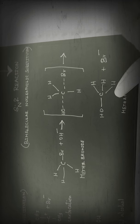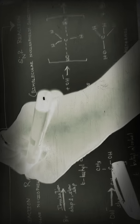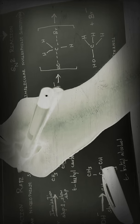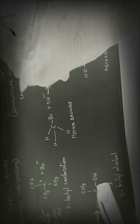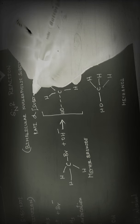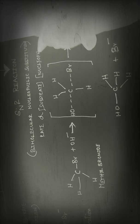So this is all. In SN2, the rate is proportional to both the substrate and the nucleophile. To summarize: for SN1, rate is proportional to substrate; for SN2, rate is proportional to substrate and nucleophile. Thanks for watching. Bye-bye.